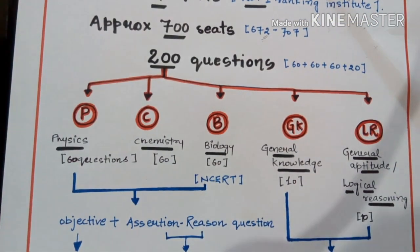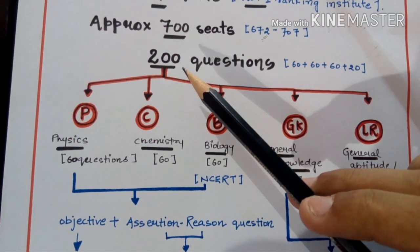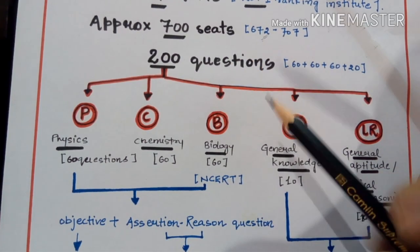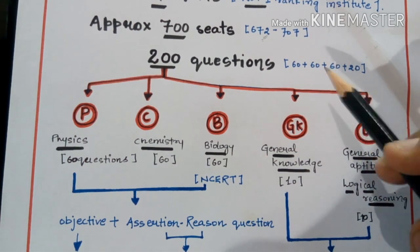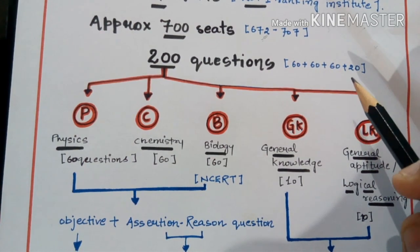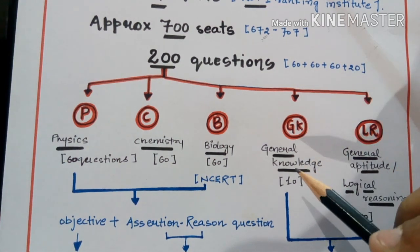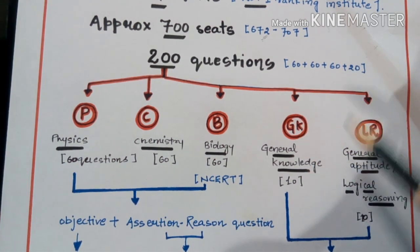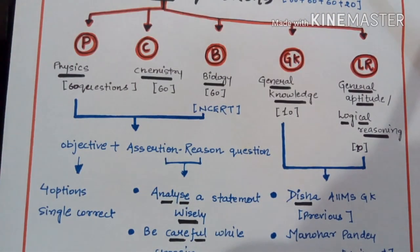The question pattern is like this: the whole paper will be 200 questions divided into various sections — 60 questions from physics, 60 from chemistry, 60 from biology, and 20 questions divided into two sections: general knowledge, which contains 10 questions, and general aptitude or logical reasoning, which also contains 10 questions.